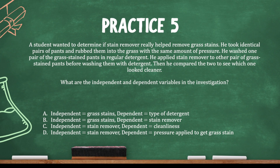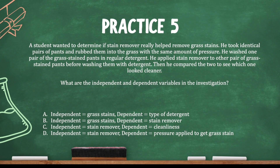A student wanted to determine if stain remover really helped remove grass stains. He took identical pairs of pants, rubbed them into the grass with the same pressure, washed one pair in regular detergent, and applied stain remover to the other before washing. Then he compared which looked cleaner. What he's changing is whether stain remover is used — so the independent variable is stain remover, which rules out A and B. The dependent variable is what's being measured: how clean the pants are. So the answer is C.